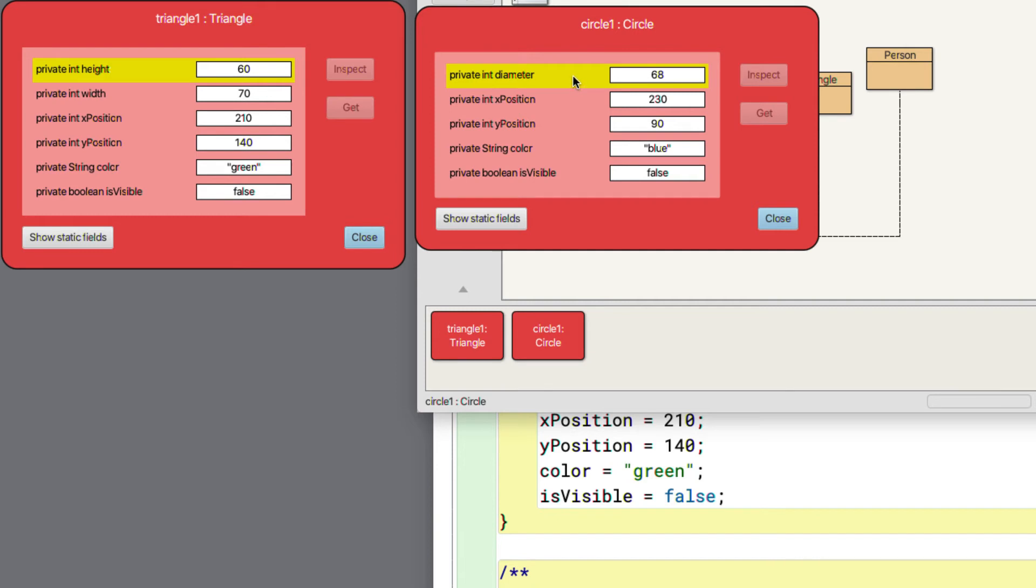it has its own distinctive diameter. So part of a circle's definition, part of its state is its current diameter. But that will be meaningless for a triangle. Triangles don't have diameters.